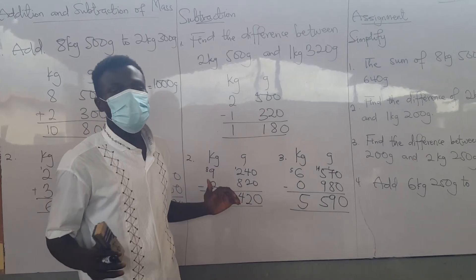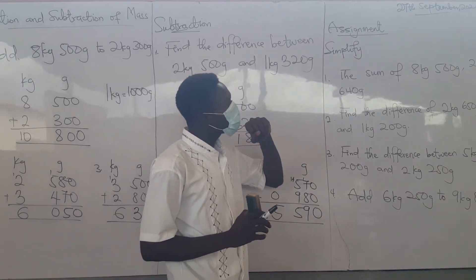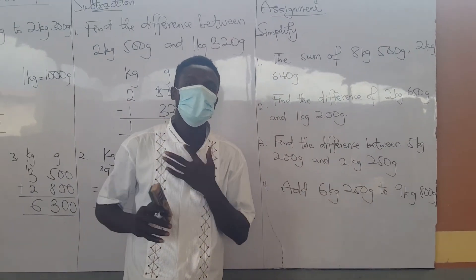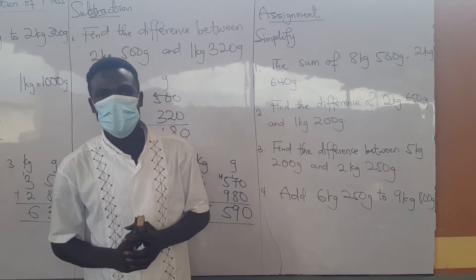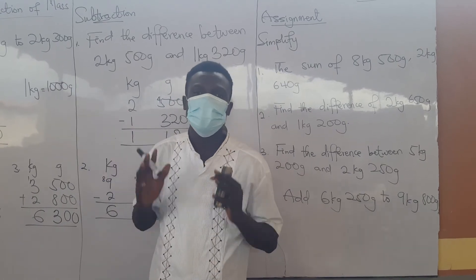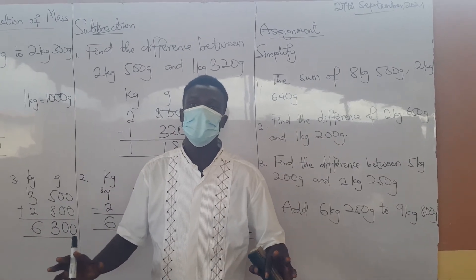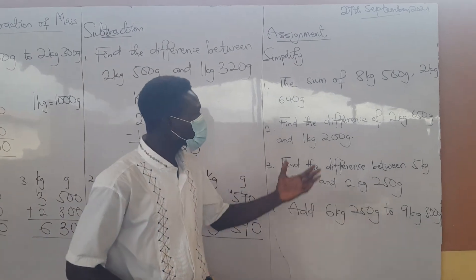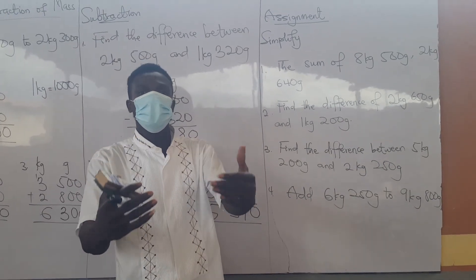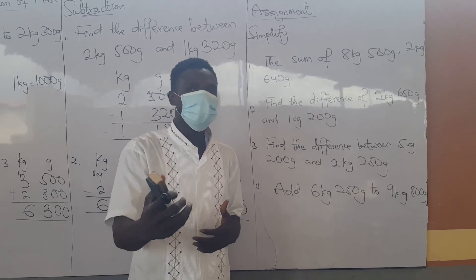If you are doing addition and subtraction, you just arrange kilograms under kilograms and grams under grams. Then perform your normal addition and subtraction. When it comes to subtraction, you do the same thing, but re-indicate that we are doing subtraction. If you do that, you will have no problem — you will get everything correct.